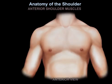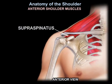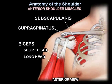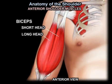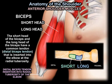Now, how about the anterior shoulder muscles? You can see the supraspinatus, the subscapularis, the short head of the biceps, and the long head of the biceps. The short head and long head of the biceps have a common tendon, and this distal bicep tendon is inserted into the elbow at the radial tuberosity.